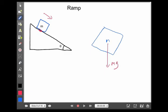It's sitting on the ramp on a surface, so the force has to be pushing 90 degrees perpendicular to that surface. So that normal force actually points like this.